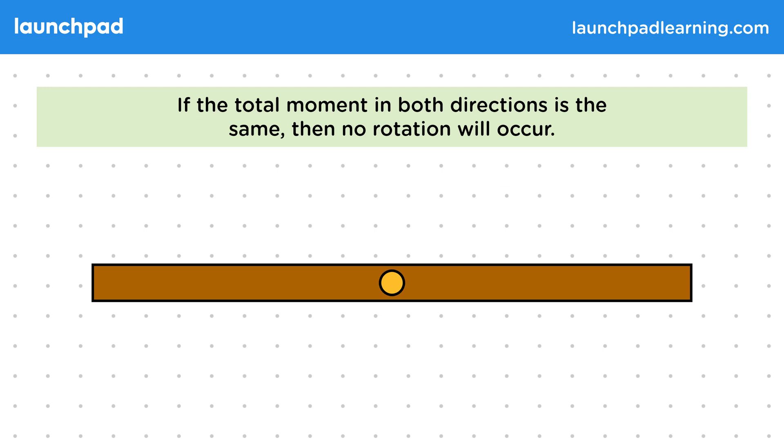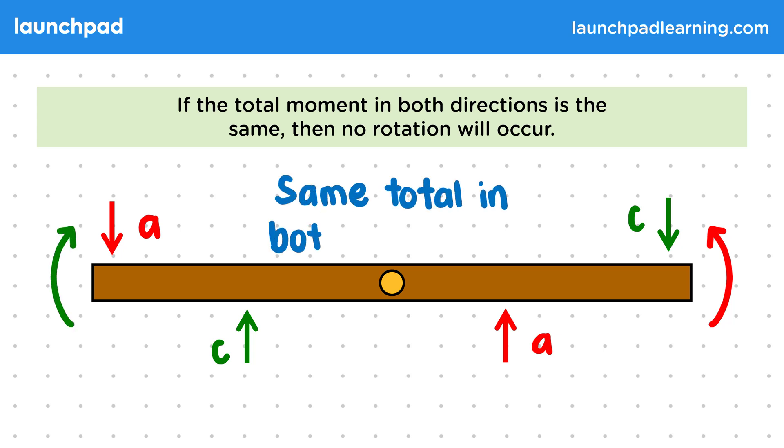Let's look at the plank again with a different set of forces. Again, we can sort these forces into those that cause clockwise and anticlockwise moments. This time, if we add up the moments in each direction, we'd find that we get the same total in both directions.